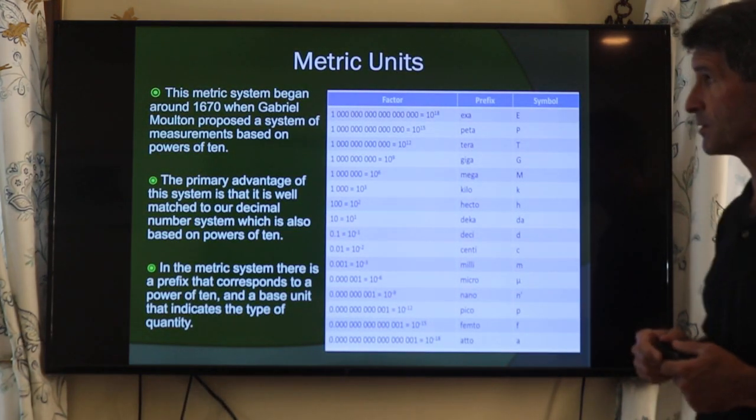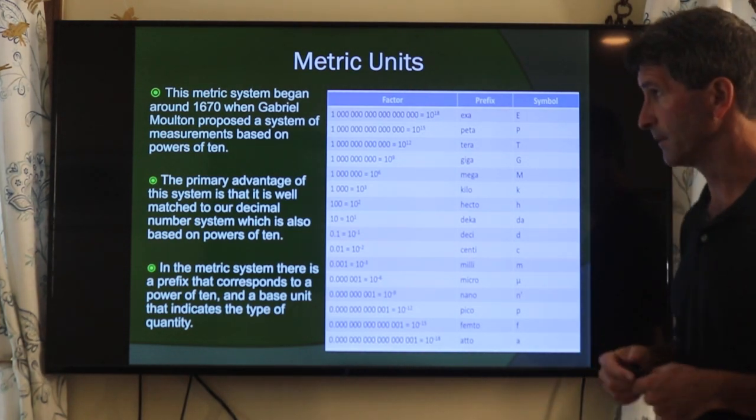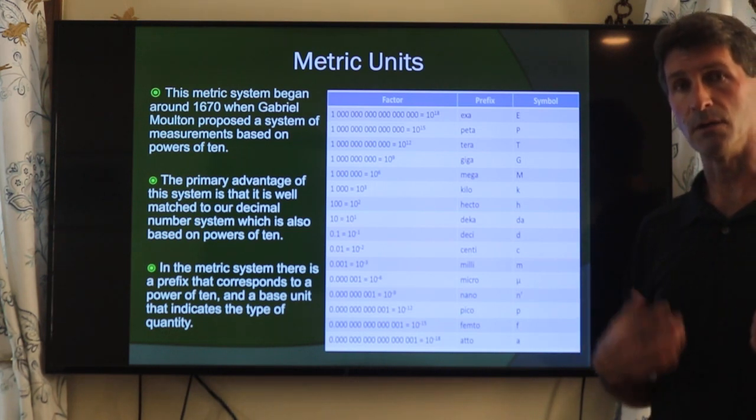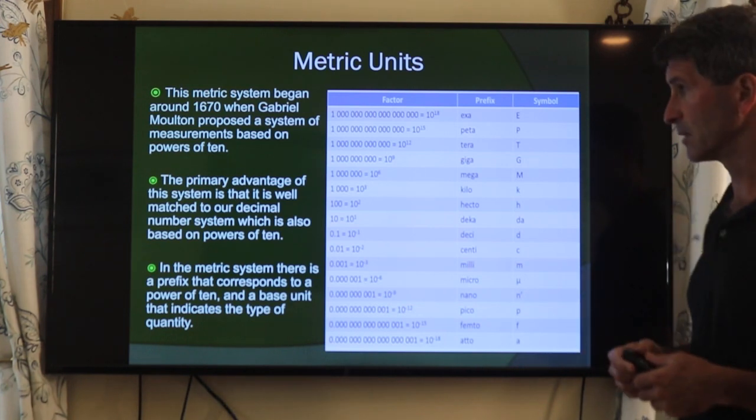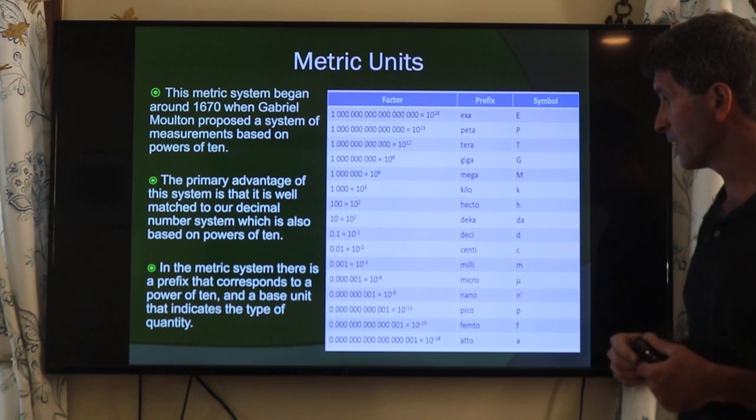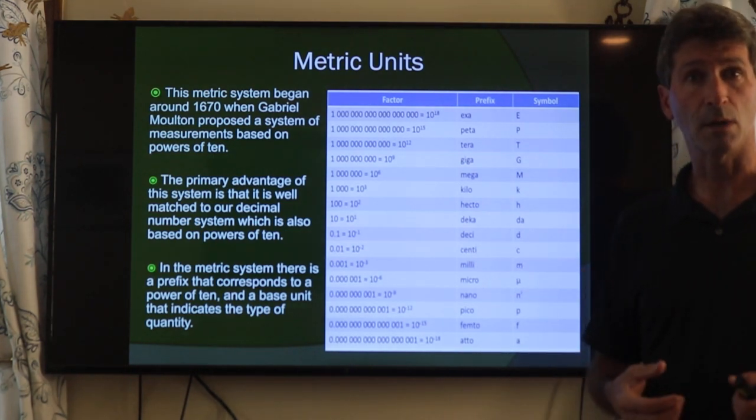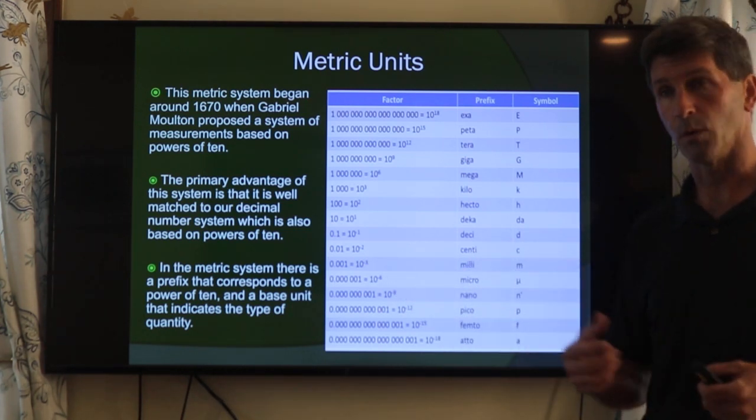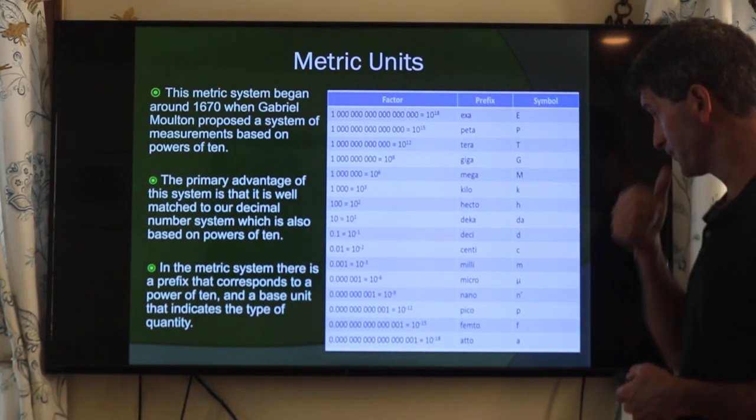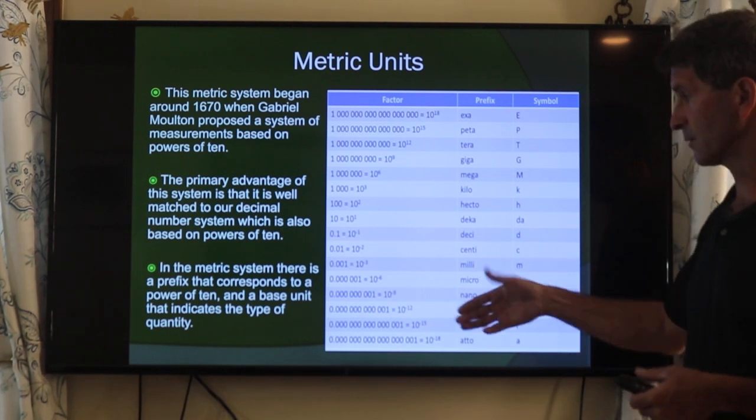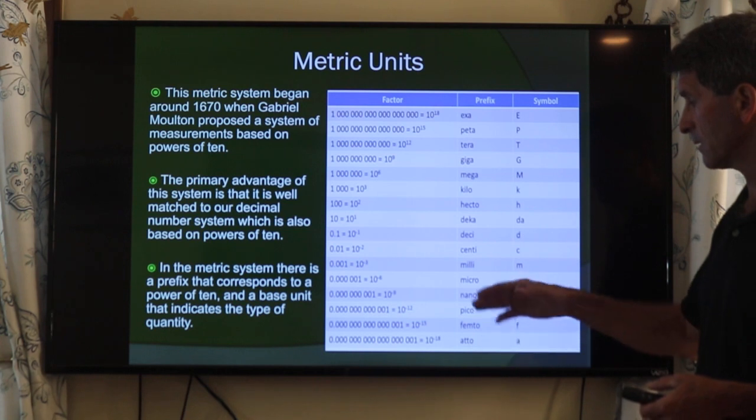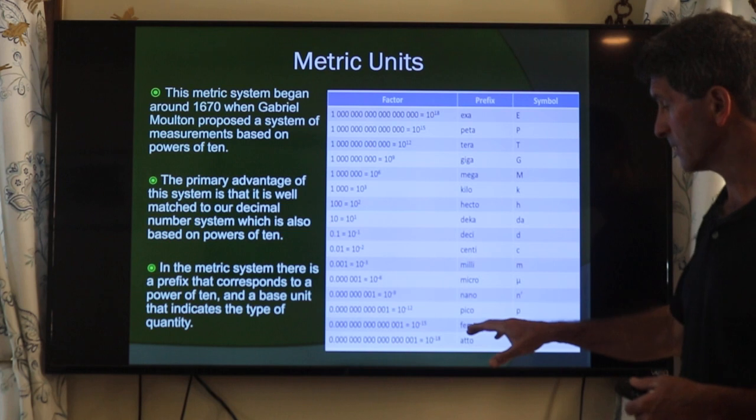The metric system was originally first developed around 1670. It was proposed as a system of units based on powers of 10. Our own number system is based on powers of 10, so this type of system fits really well. The idea was to come up with some base and then put a metric prefix in front of it. For instance, a centimeter is 1 one-hundredth of a meter. Center represents 10 to the minus 2. A millimeter is 1 one-thousandth of a meter, 10 to the minus 3. And we can get down to much smaller units which are more common today. The micrometer is very common in biology. The nanometer is very common in physics and in optics. Femtometer, also known as a fermi, means 10 to the minus 15.